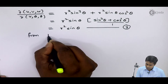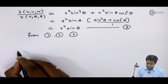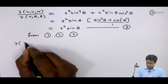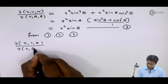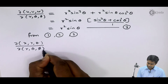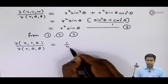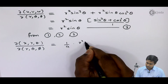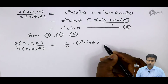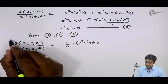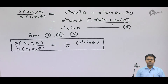From equations 1, 2, and 3, we get the Jacobian of x, y, z with respect to r, theta, phi as nothing but 1/4 — that is the value of the first Jacobian — multiplied by r² sine theta — that is the value of the second Jacobian. And this is the final answer. Thank you.